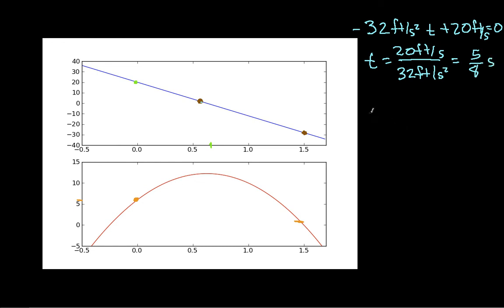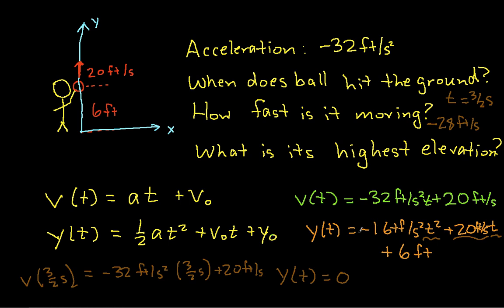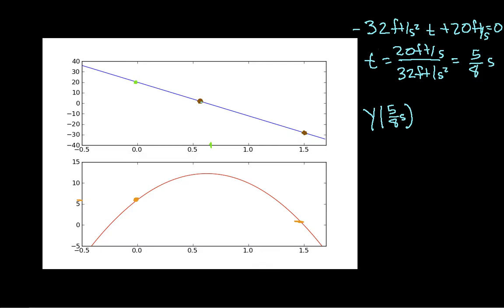And then the altitude for this y of 5 eighths seconds, I take this, or I take 5 eighths seconds, I just plug it back into this expression for y of t, and when I work it out, I discover that y of 5 eighths seconds is 12.25 feet.